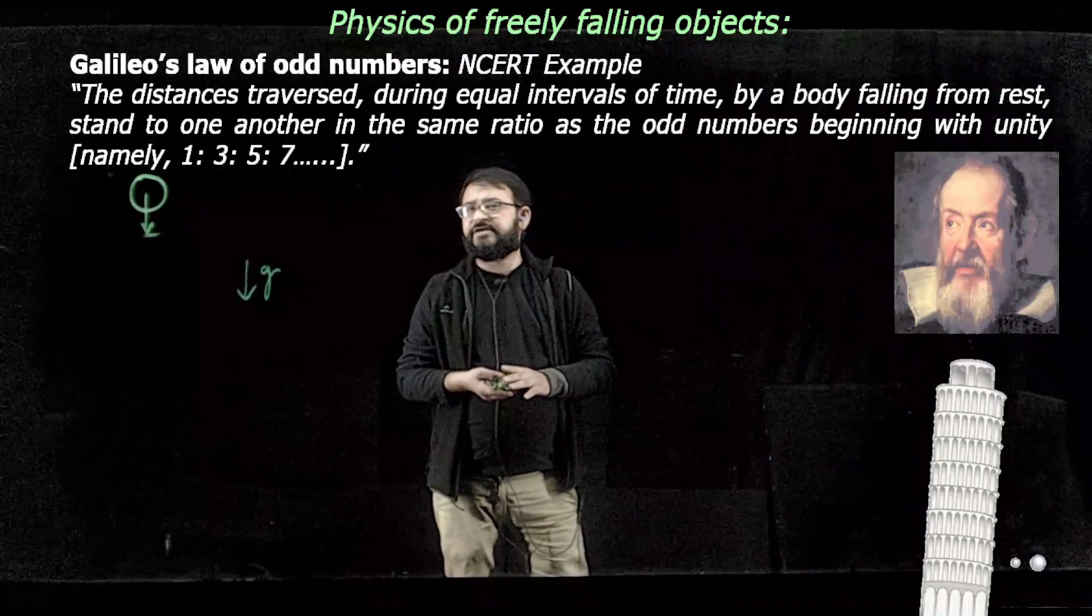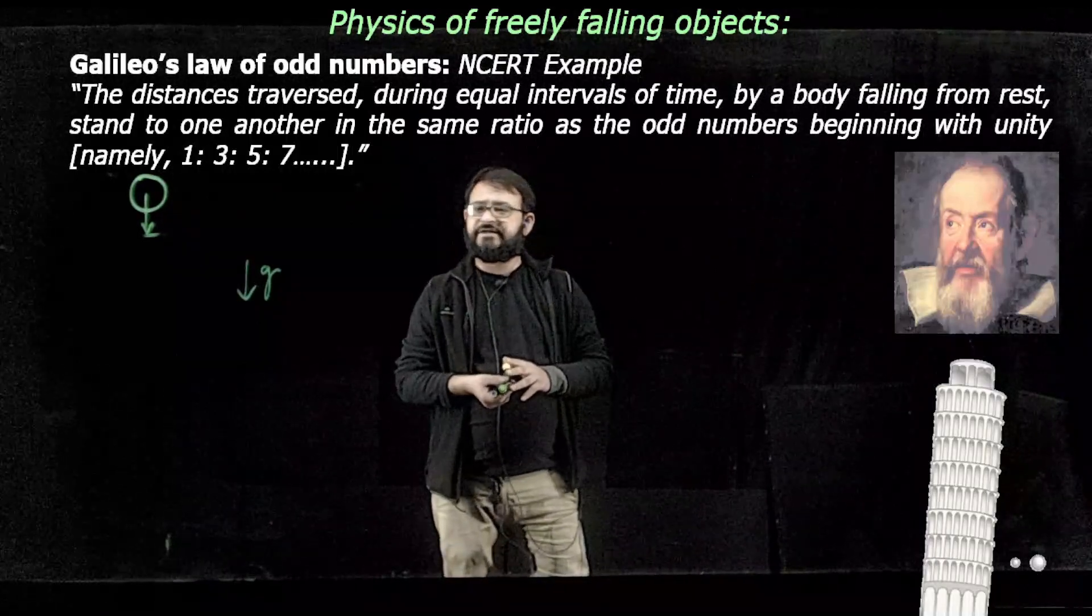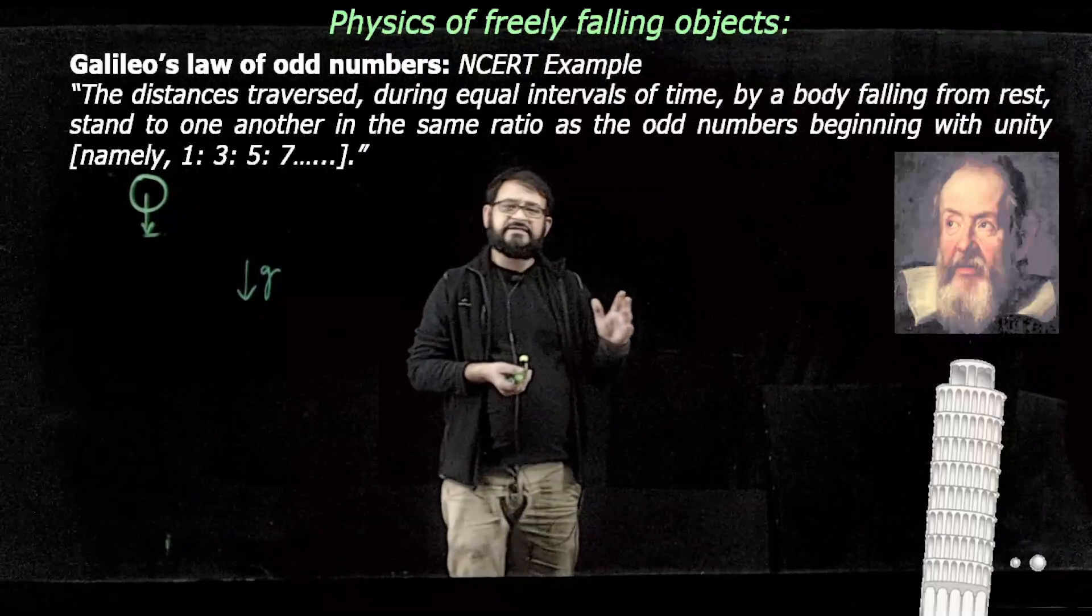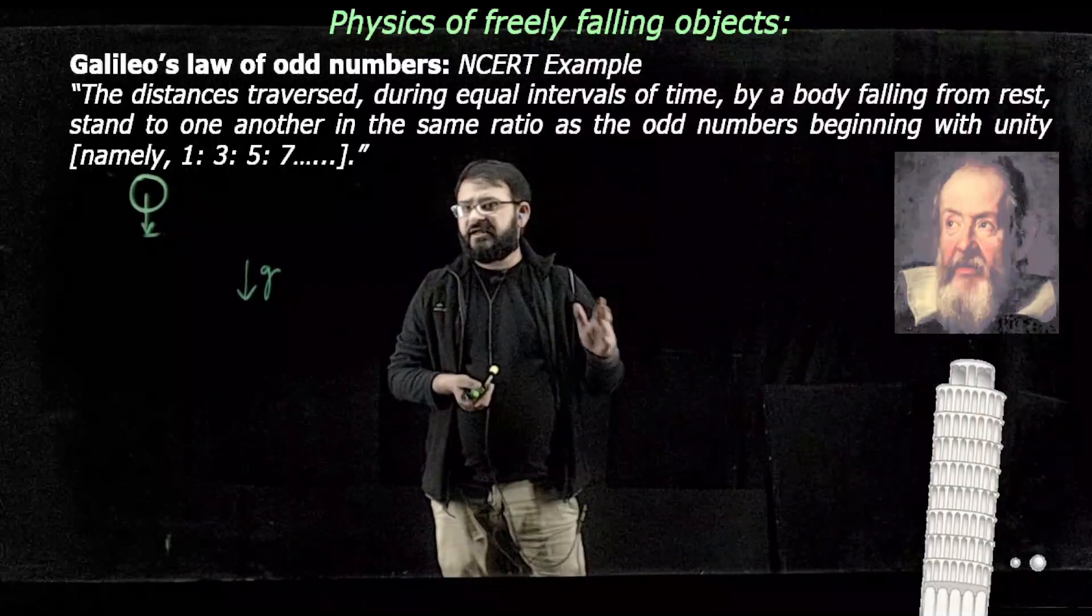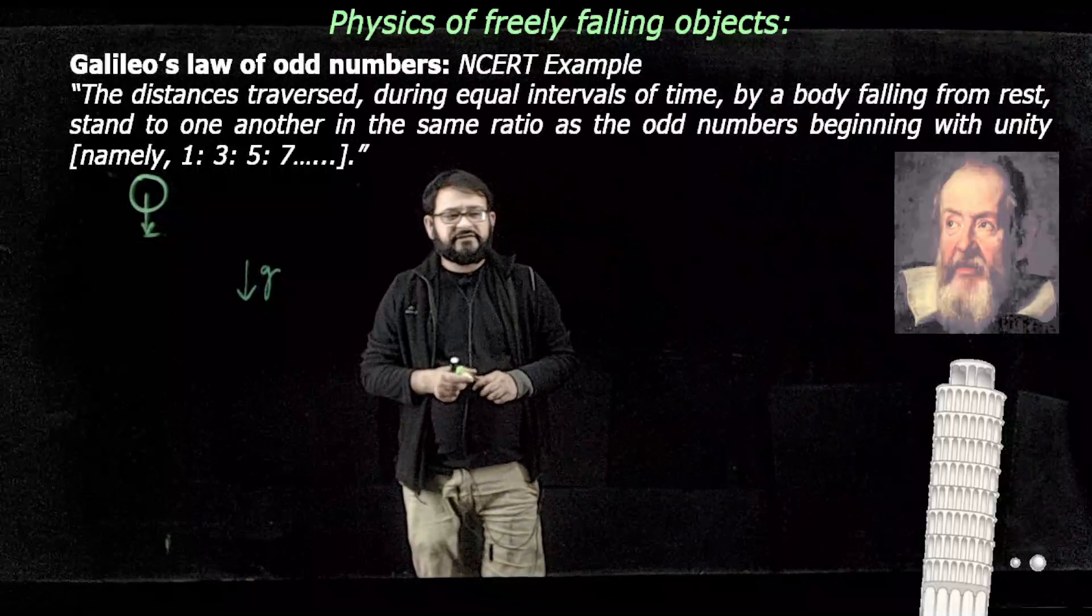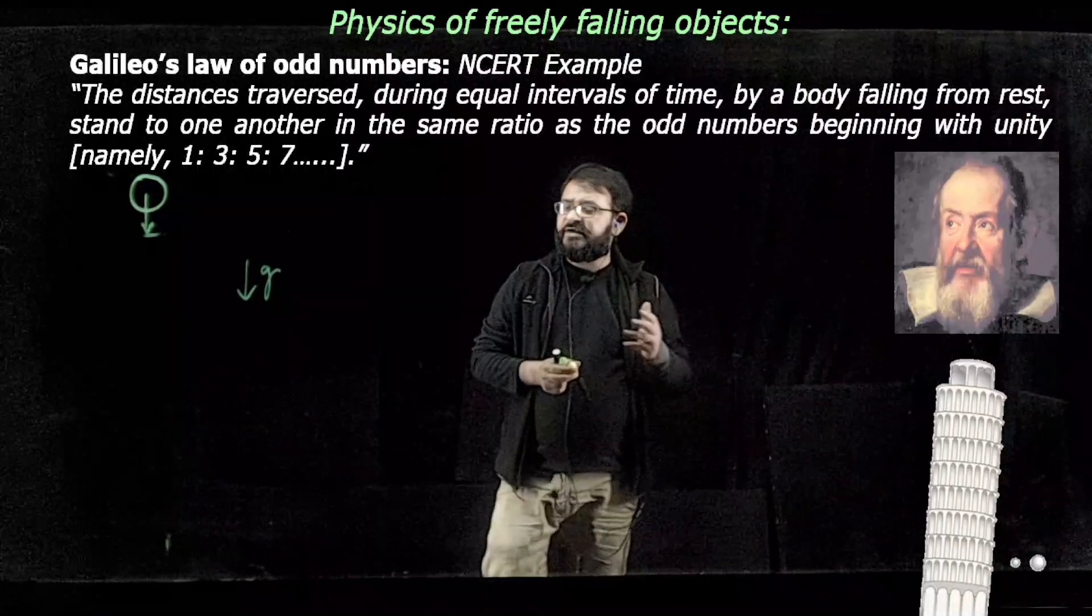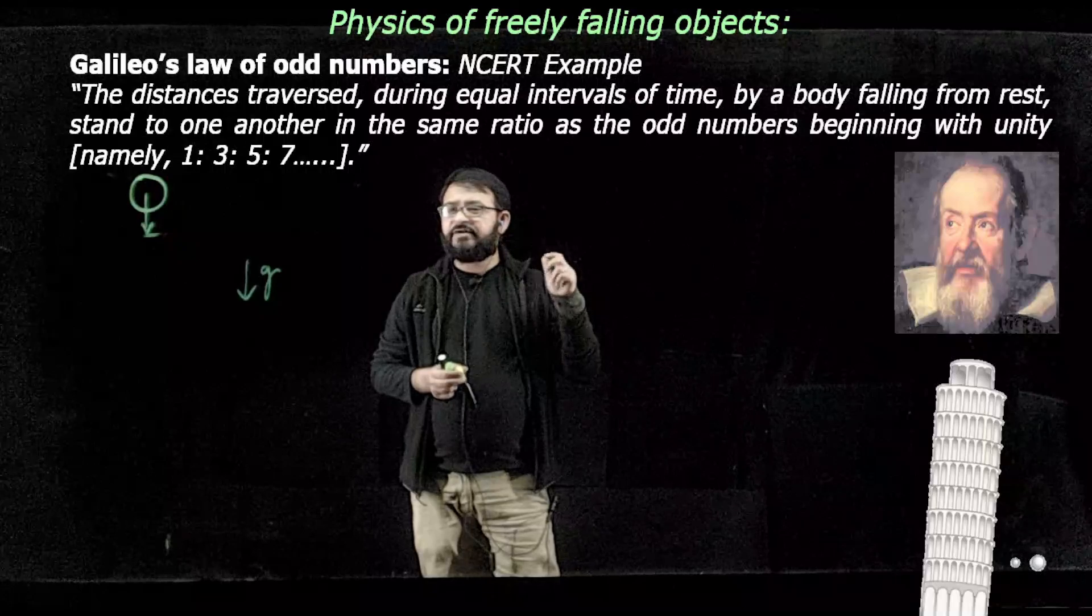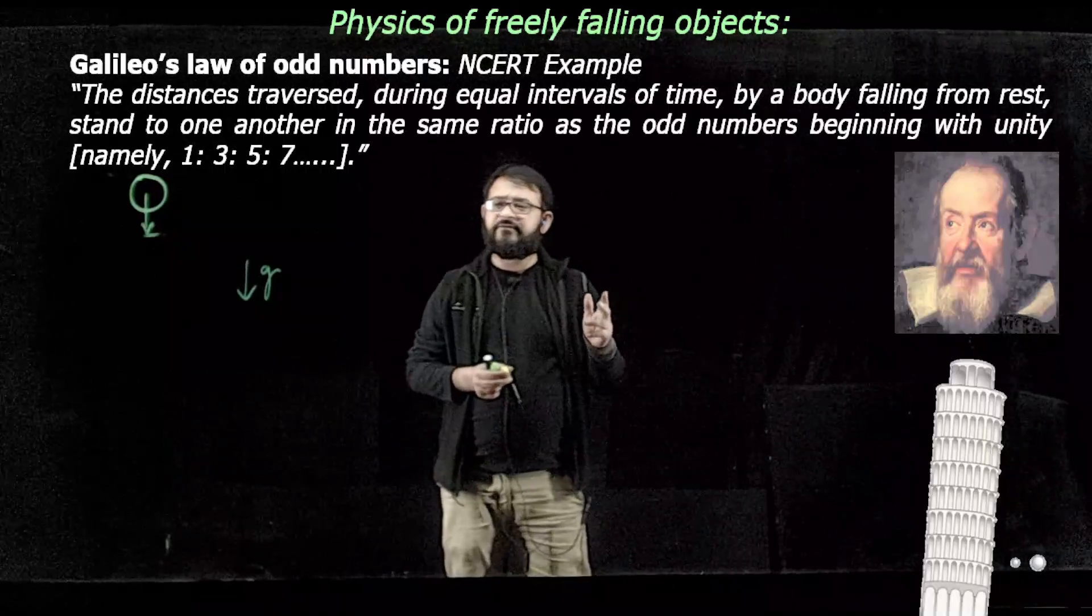All objects achieve exactly the same velocity, irrespective of their masses, and they take exactly the same time given that air resistance is tiny. The same idea motivated Newton to extend it to the moon. So even the moon is freely falling.